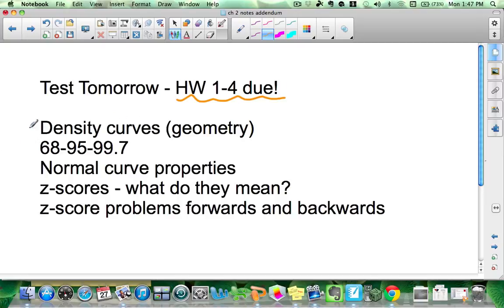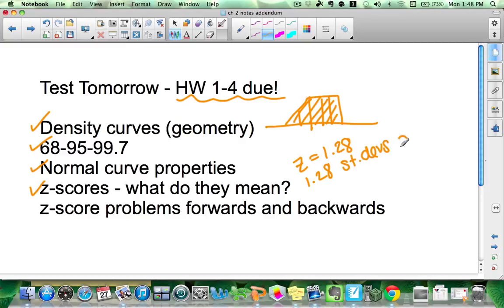Topics that were covered this chapter include density curves. Remember the ones that we had to do using geometry. We had to verify that the area under the curve was equal to 1 and find certain areas between certain values. We learned about the 68, 95, 99.7 rule as well as some other normal curve properties. This is when we first learned about z-scores and what do they mean. A z-score of 1.28 means that you are 1.28 standard deviations above the mean. Why above? Because the z-score is positive.